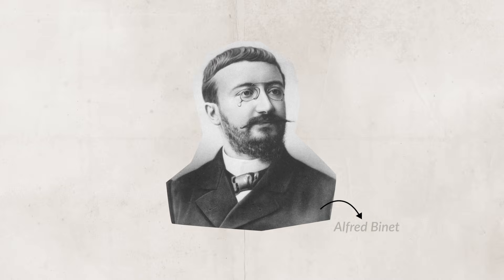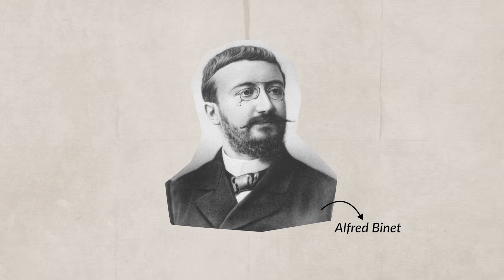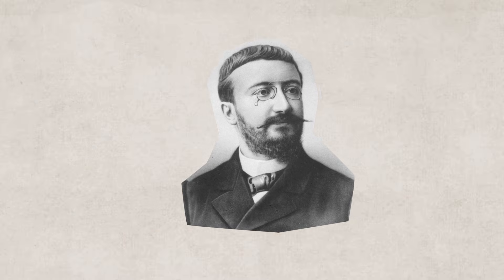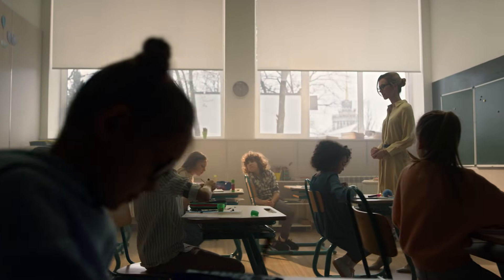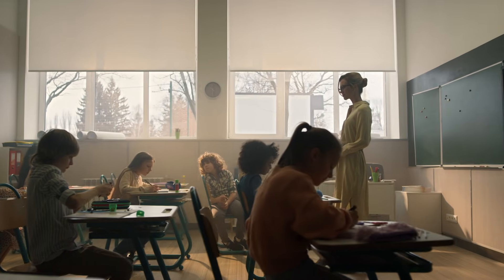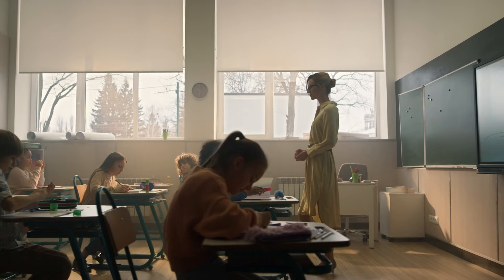Alfred Binet expanded our understanding of intelligence and helped lay the groundwork for the education system. Binet and his student Theodore Simon sought to better understand how people developed. They believed children followed a certain intellectual track and sought to understand each individual's mental age — the level of performance that typically happens at a set age. They used aptitude tests with problem-solving questions to determine which classes certain children should be in.